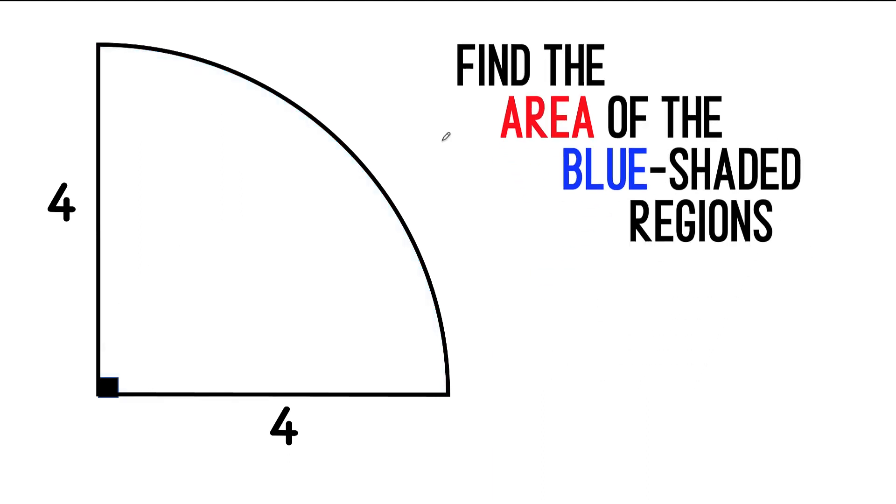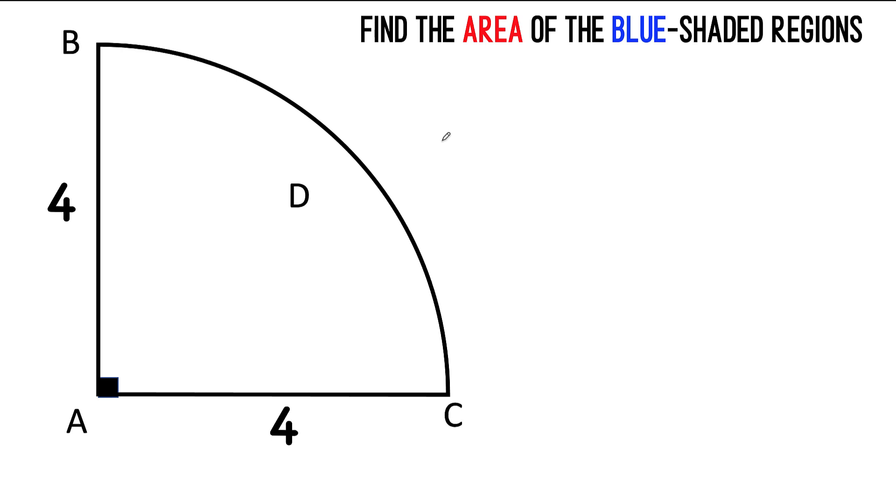Now let's solve this problem. Let's start by labeling the parts. So we have two semicircles and let their point of intersection be point D. This is point A, that's point B and that's point C.